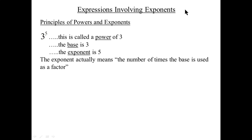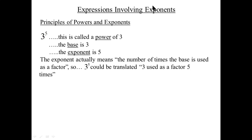The exponent has a meaning: it represents the number of times the base is used as a factor. In this case, three to the fifth means three used as a factor five times, because the exponent is five. So three to the fifth equals three times three times three times three times three — three used as a factor five times.